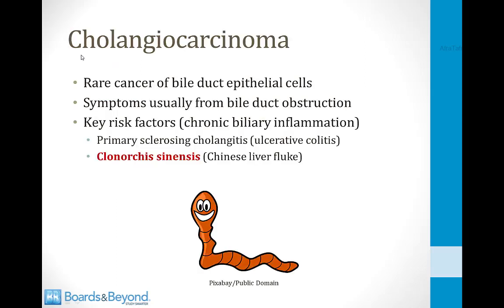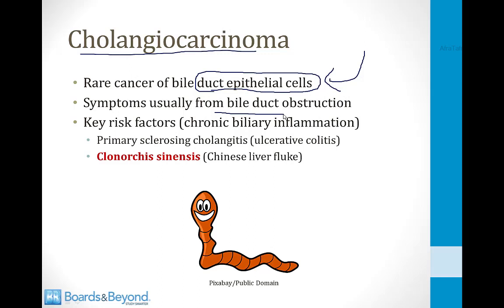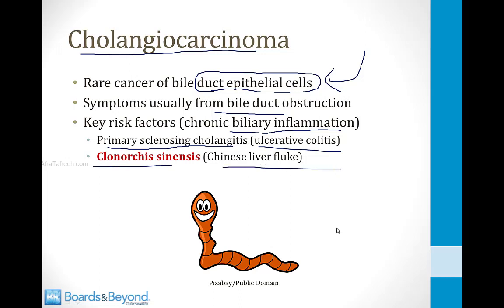Cholangiocarcinoma is a rare cancer of the bile duct epithelial cells — do not confuse this with gallbladder carcinoma. Symptoms arise from obstruction of bile flow: jaundice, right upper quadrant pain, and elevated alkaline phosphatase. Key risk factors are anything that causes chronic biliary inflammation. For Step 1, the two conditions to know are primary sclerosing cholangitis and a helminth infection called Clonorchis sinensis, the Chinese liver fluke, which you can get from eating contaminated fish.